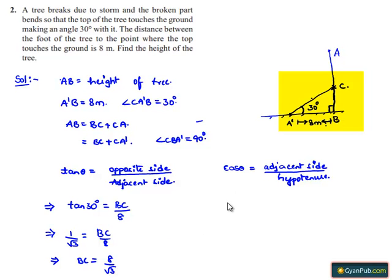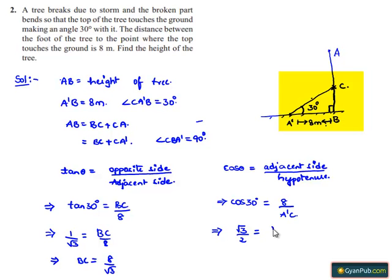Now using cos theta to find the hypotenuse: cos 30 degrees equals adjacent side A'B, which is 8 meters, divided by hypotenuse A'C. Since cos 30 degrees equals root 3 by 2, we get root 3 by 2 equals 8 by A'C, which implies CA' equals 8 into 2 by root 3, that is 16 by root 3.